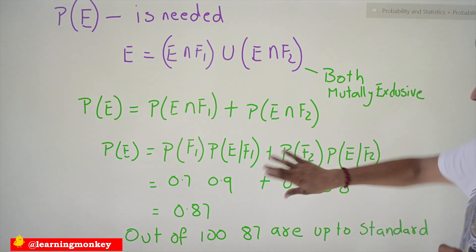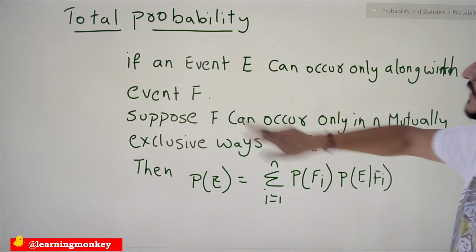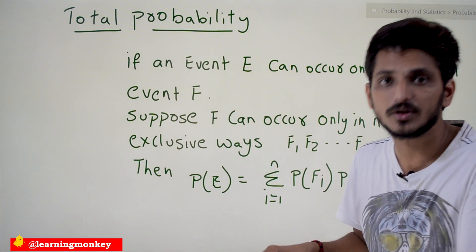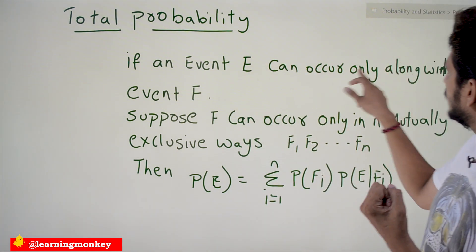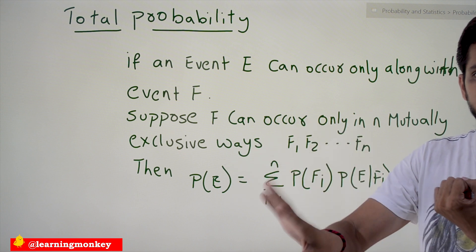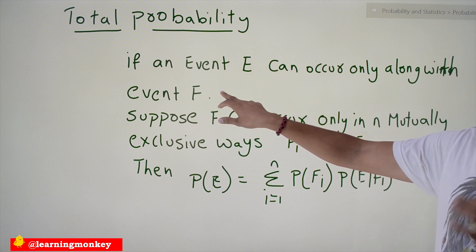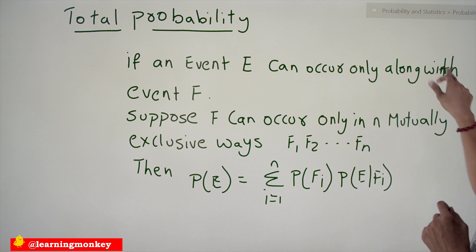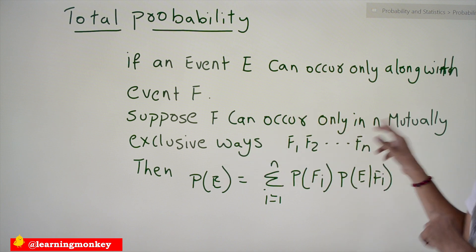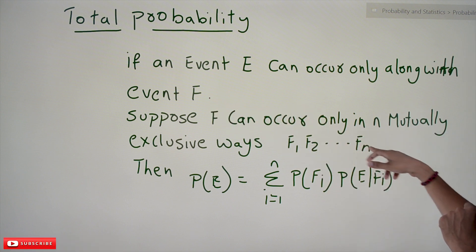Now, with the understanding of this example, we go into the formal definition of total probability. If an event E can occur only along with event F — here E is finding a good product, and F means it may be manufactured in different plants — then if event F can occur in N mutually exclusive ways (from plant 1, plant 2, and so on up to plant N), then we apply the total probability formula.